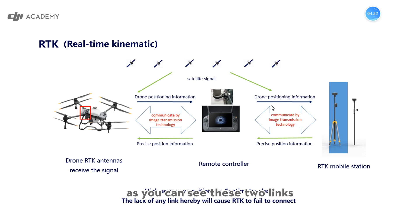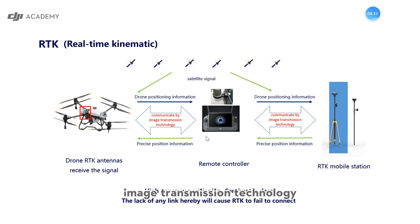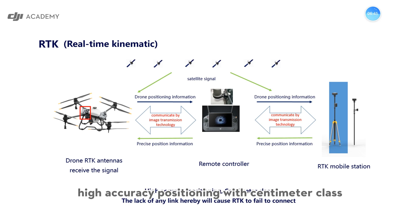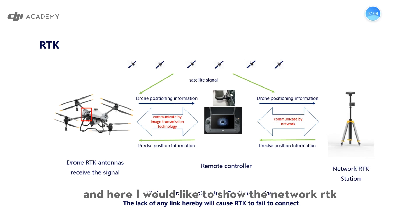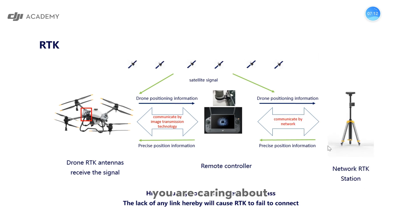The RTK antennas on the Agras will receive the signal and finally achieve high accuracy positioning with centimeter-level precision. The two communication links between the aircraft and the RTK station use image transmission technology. With the RTK signal, the Agras can get high accuracy positioning for fruit tree spraying and remote controller mapping.